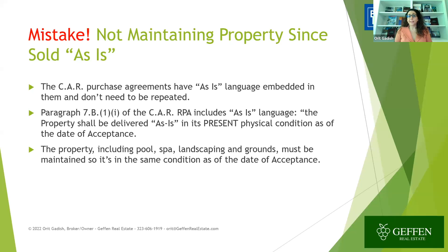Mistake: not maintaining properties sold as-is. There's a big misunderstanding — when people say it's being sold as-is, in their mind it means they don't need to do anything. But let's read what the CAR purchase agreements say about as-is. Paragraph 7(b)(1)(i) of the CAR RPA indicates the property shall be delivered as-is in its present physical condition as of the date of acceptance. The property — including pool, spa, landscaping, and grounds — must be maintained so it's in the same condition as of the date of acceptance. So maintain the exterior, pool, spa, landscaping, and grounds in the same condition as when the offer is accepted.